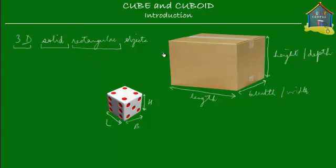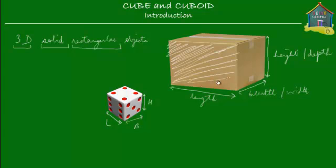These faces are rectangular, so that's why we call it rectangular. This is one face — in the cuboid, this is one face. Behind this face is another face that we can't see. This face is made of the height and the length — a rectangle made of the height and the length.